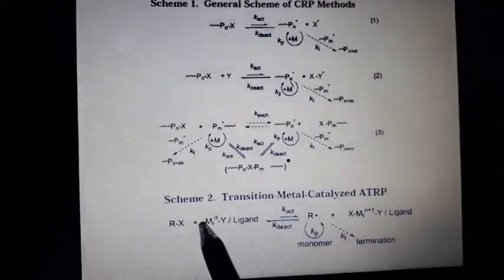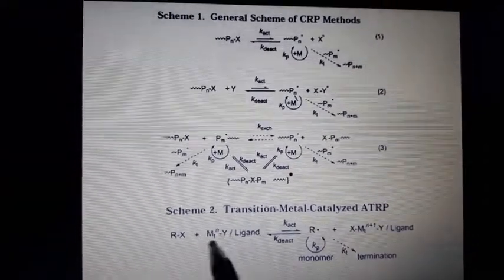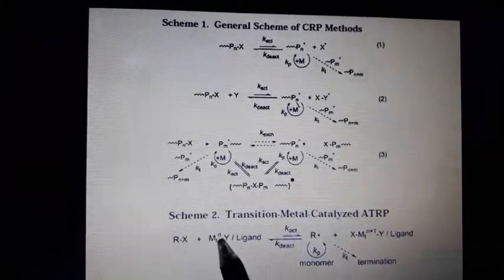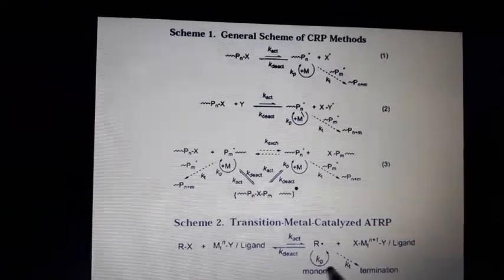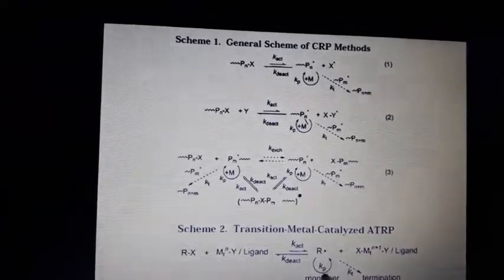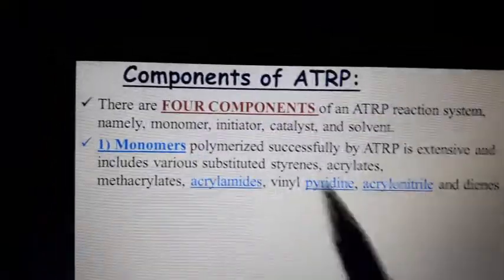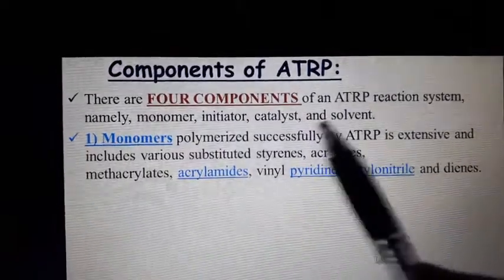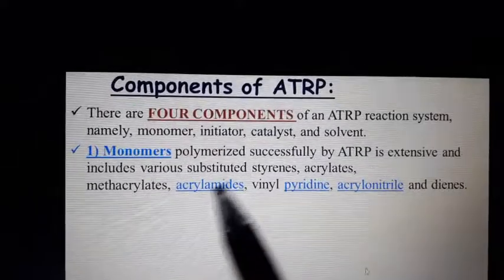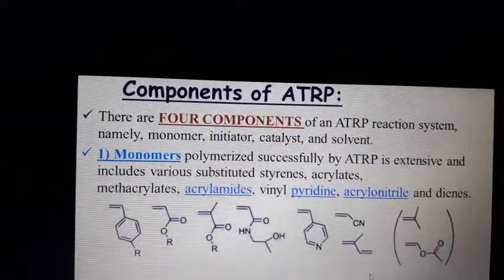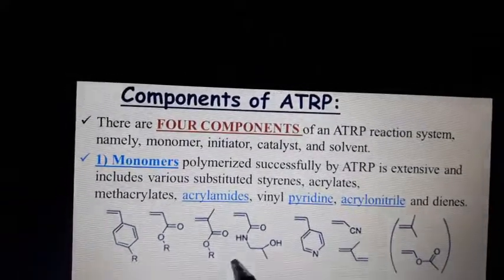The scheme shows an alkyl halide initiator and a catalyst complex. The catalyst complex is converted into the higher oxidation state and we have a radical which is active to propagate the polymer chain. The key components of ATRP are monomer, initiator, catalyst, and solvent. Different monomers can be polymerized using ATRP such as vinyl, acrylate, and methacrylate.